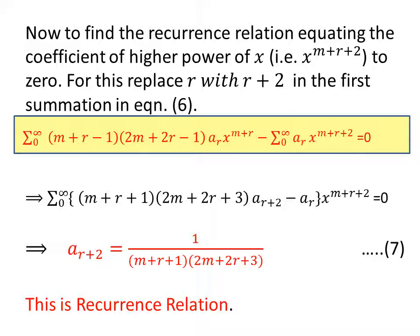Now in equation 6, we replace r with r plus 2 in the first summation. Putting r plus 2 in place of r, you get: (m+r+1)(2m+2r+3) a_(r+2) minus a_r, with x to the power m+r+2, equal to 0. Simplifying, a_(r+2) equal to 1 upon (m+r+1)(2m+2r+3) — this is equation 7, the recurrence relation.